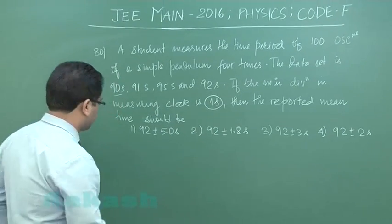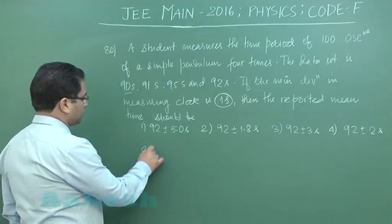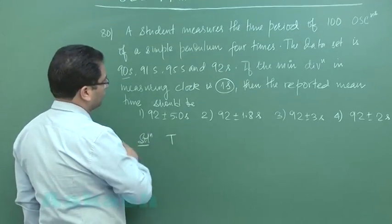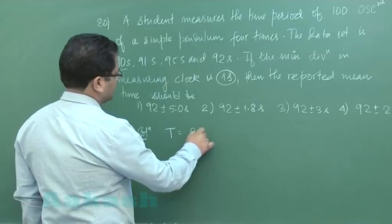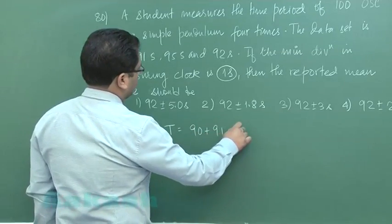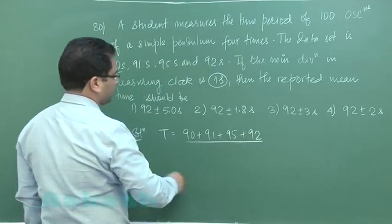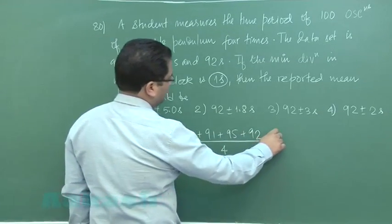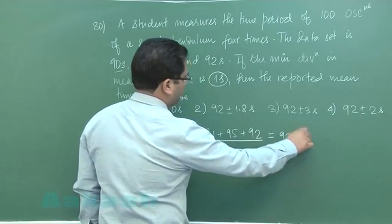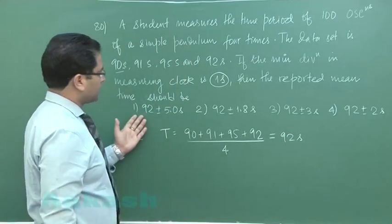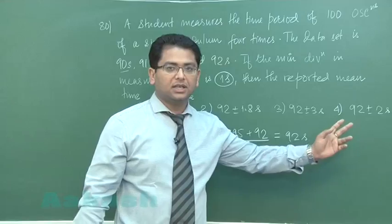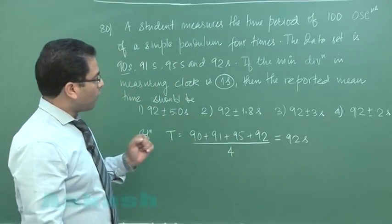First, we'll calculate the mean value of the time period, which is (90 + 91 + 95 + 92) divided by 4. This value comes to be 92 seconds, and that's no problem because the value given everywhere is 92. But the question now is how are we going to report the mean time.